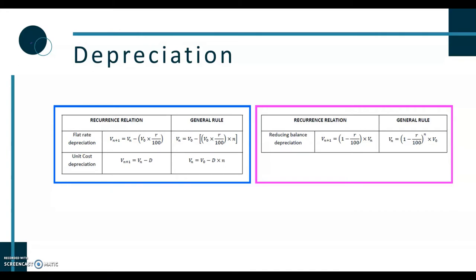With depreciation, remember there are three main types. The first two are linear: flat rate depreciation and unit cost depreciation. In both cases the rule is exactly the same. The only difference is that if you are told the depreciation as a rate — say 10% per year — you would use that to work out the actual depreciation amount per year. Unit cost is per unit of use, so the same amount comes off the value each time.